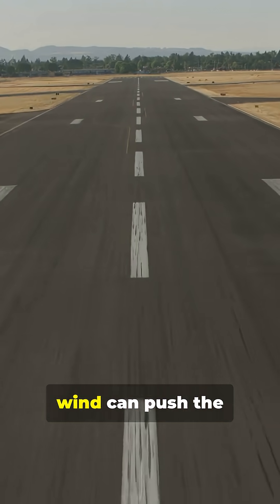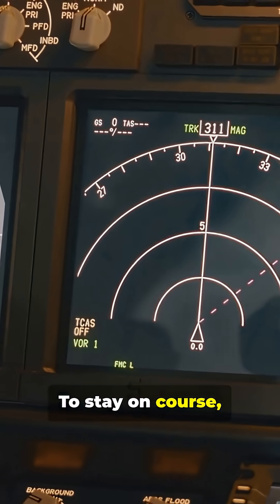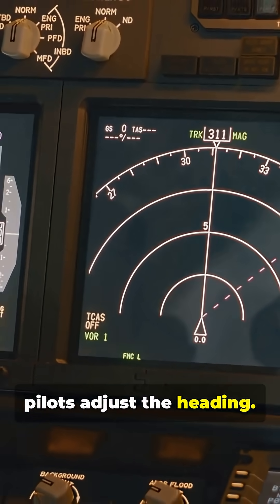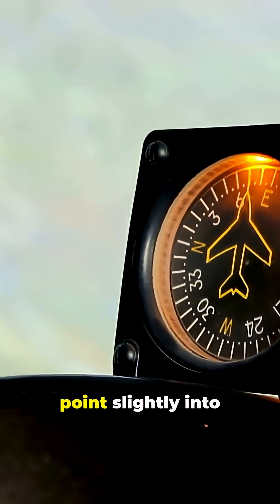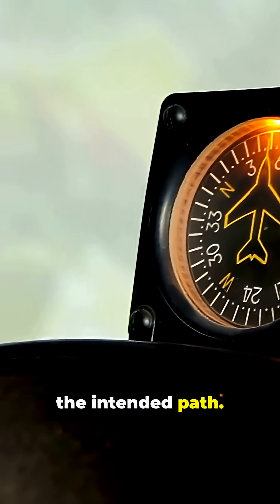But in real life, wind can push the airplane off that path. To stay on course, pilots adjust the heading. That's the direction the nose of the airplane is pointing. You often need to point slightly into the wind to stay on the intended path.